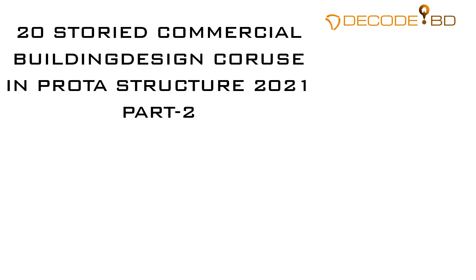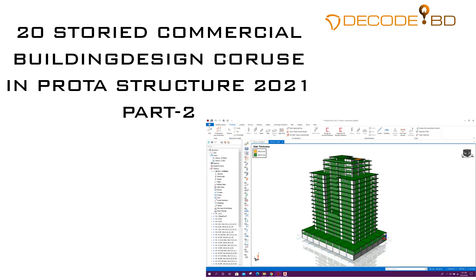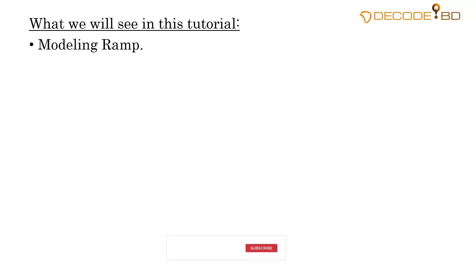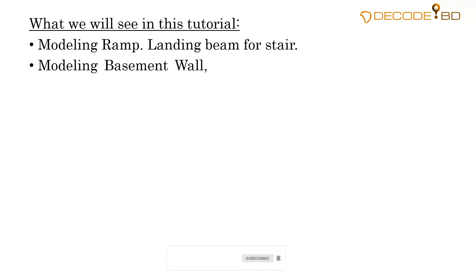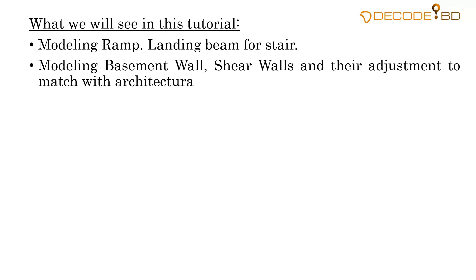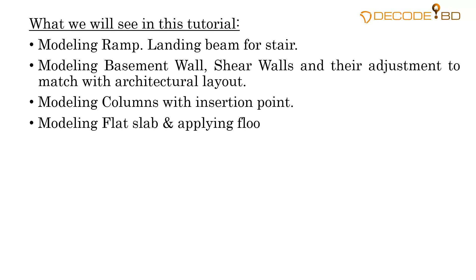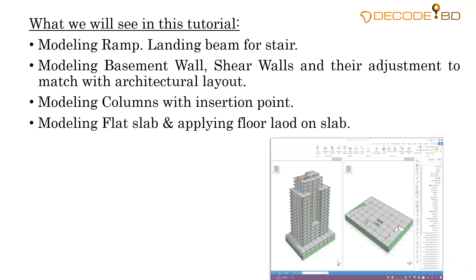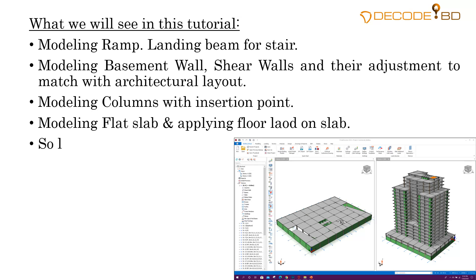Bismillahirrahmanirrahim. Dear viewers, we will continue the 20-storey commercial building design course in prototype structure 2020. Today is part two. This is our final model — we will finish the model then go for analysis, design, and detailing. I am uploading the course part by part so I can explain all steps in detail. Today we will model up to basement roof, so let's start.